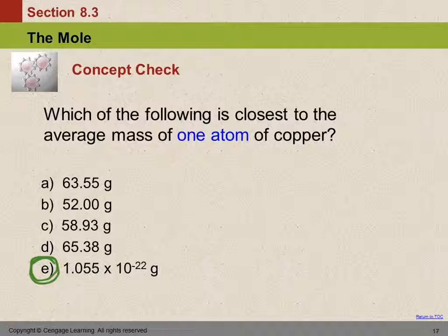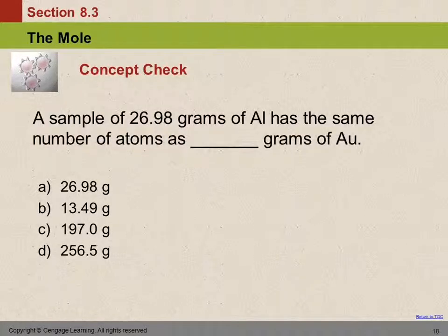That was a trick question. A sample of 26.98 grams of aluminum has the same number of atoms as how many grams of gold? Well, 26.98 is the mass of one mole of aluminum. One mole is Avogadro's number of particles. What's the mass of one mole of gold? 196. So must be C, 197.